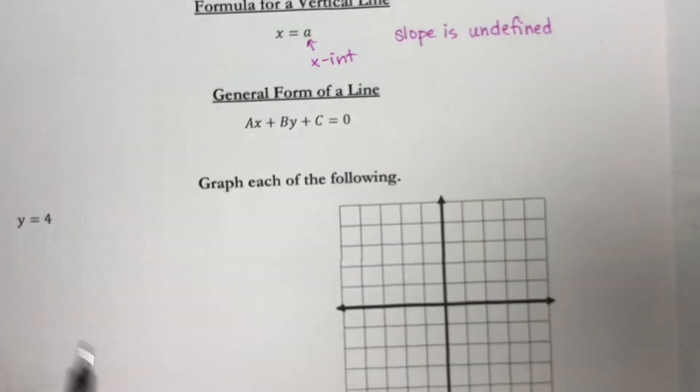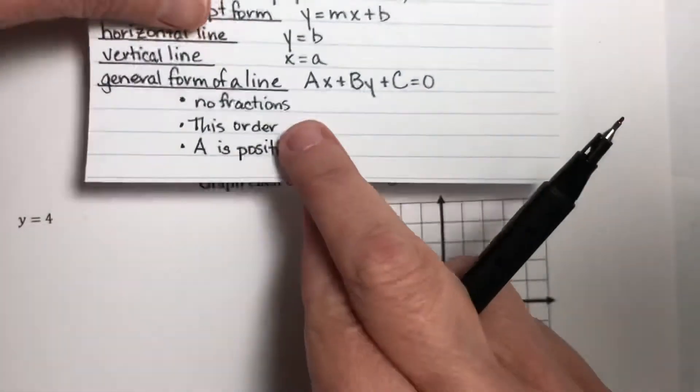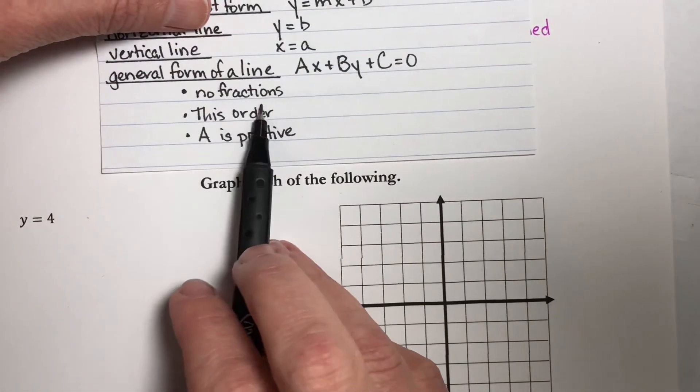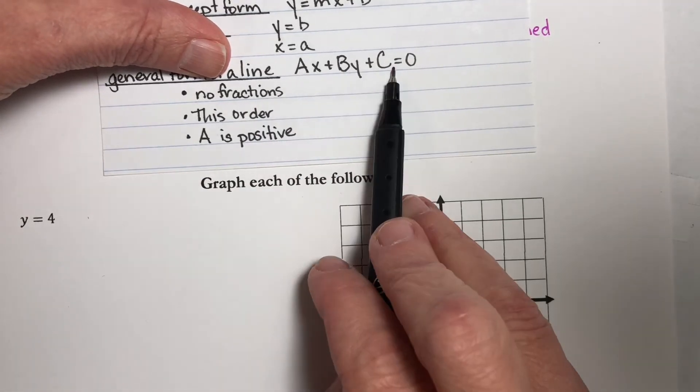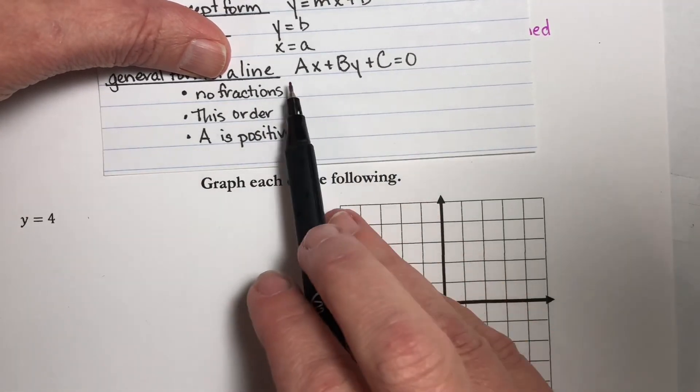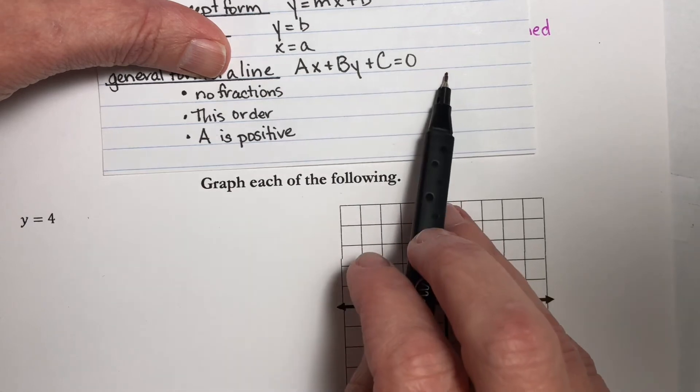Now we have a couple of other little requirements. They don't want you to have fractions in this. So if any of these three numbers happens to be a fraction, then we're going to kill the fraction by multiplying by the common denominator.